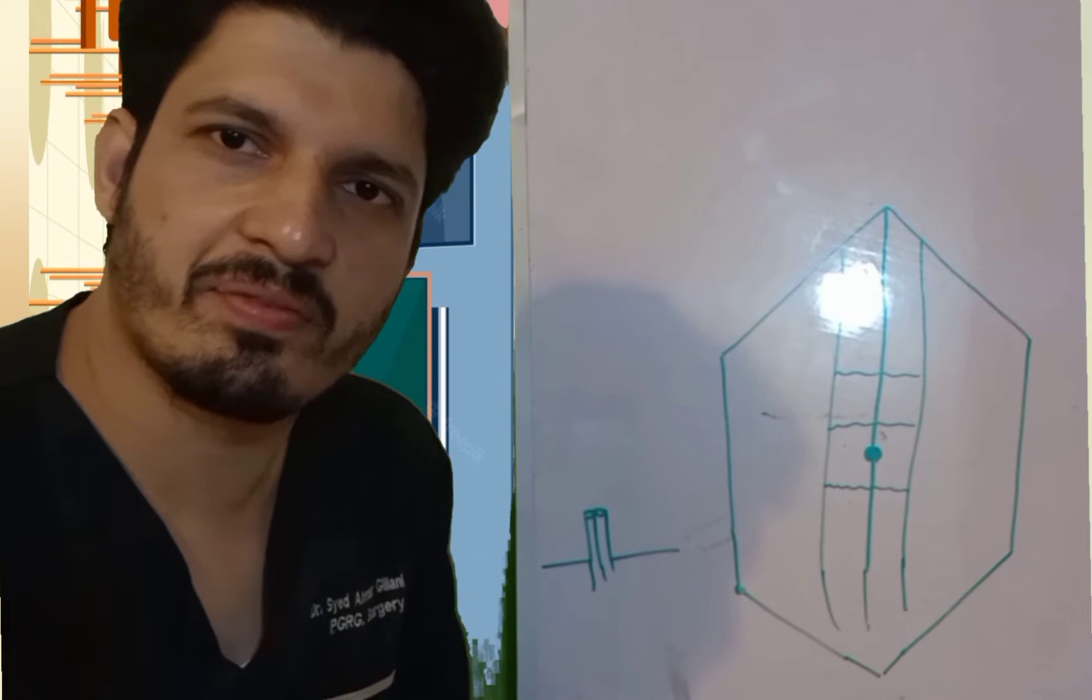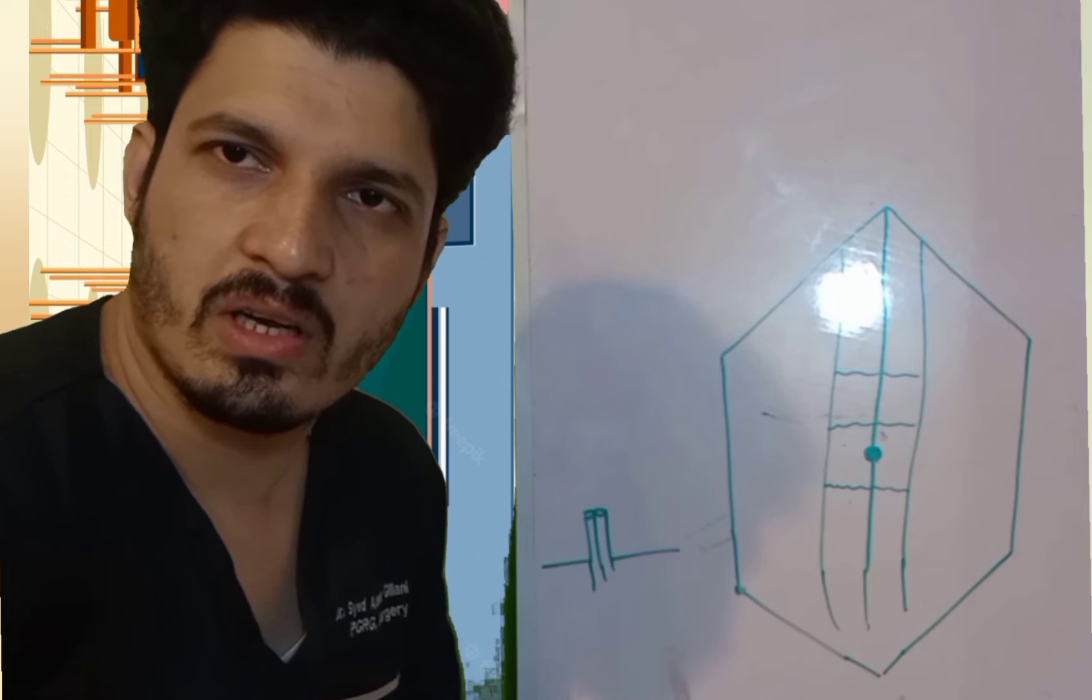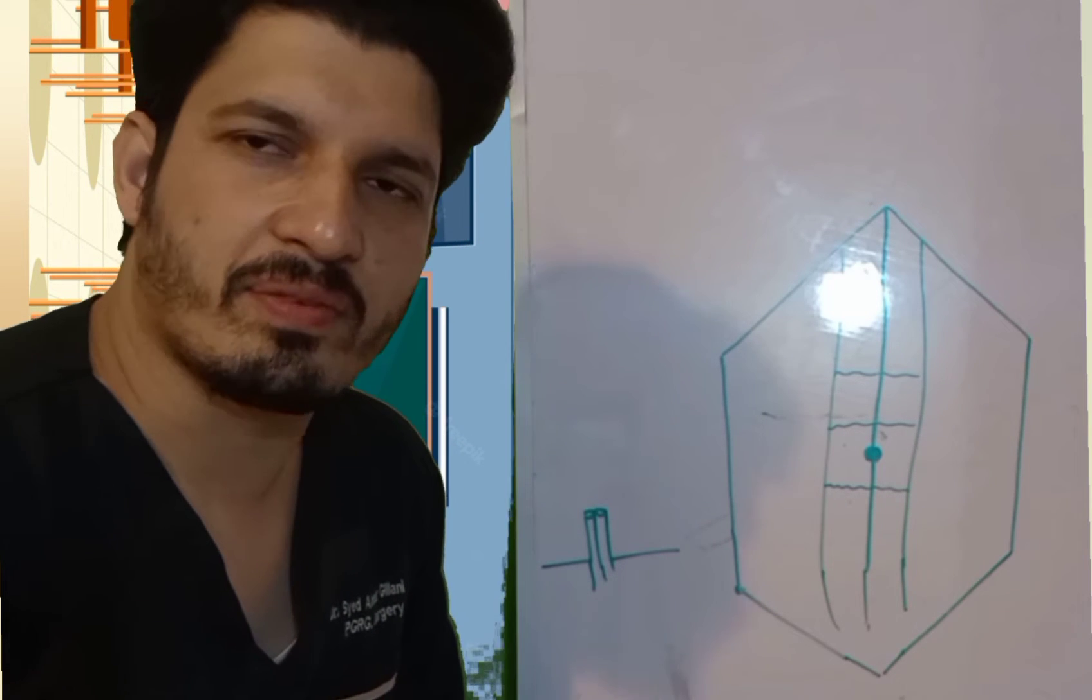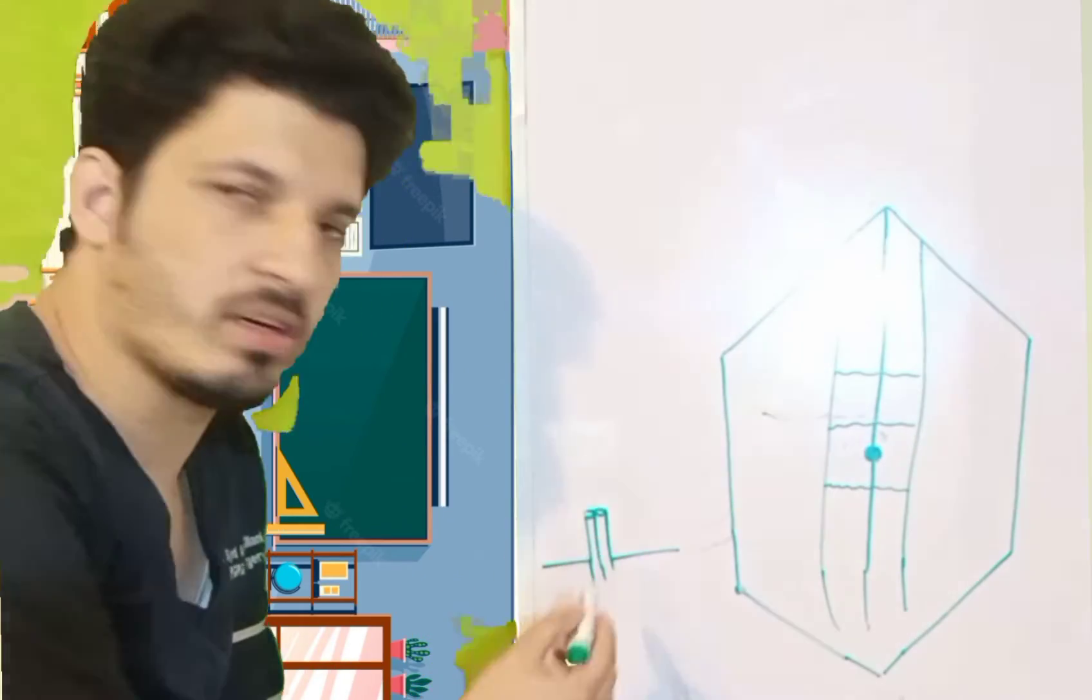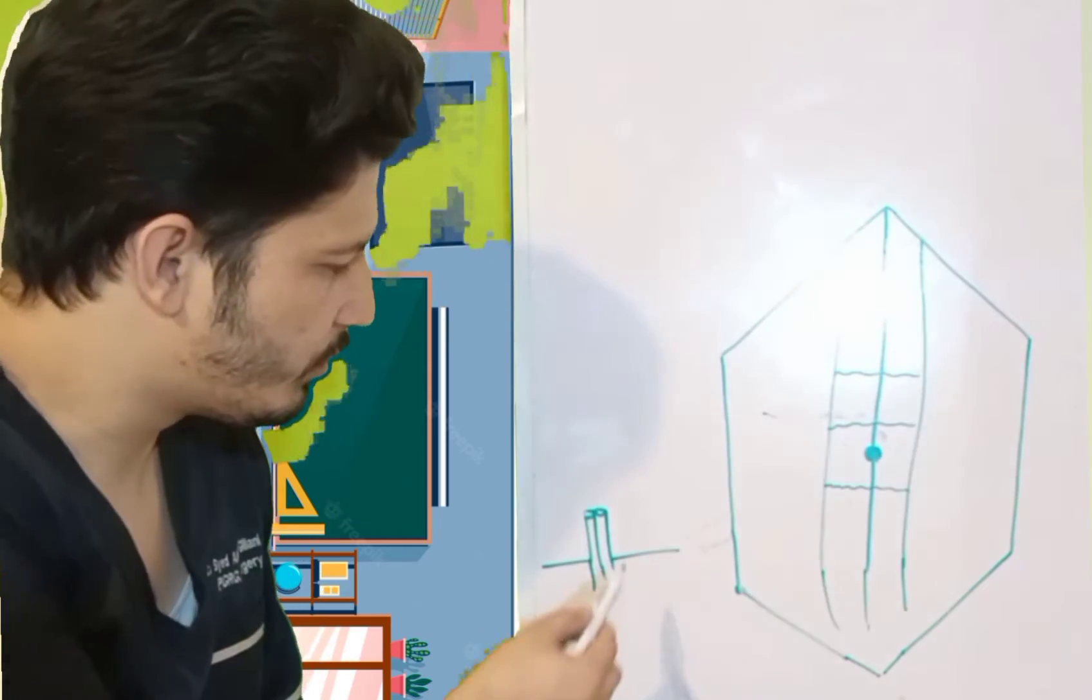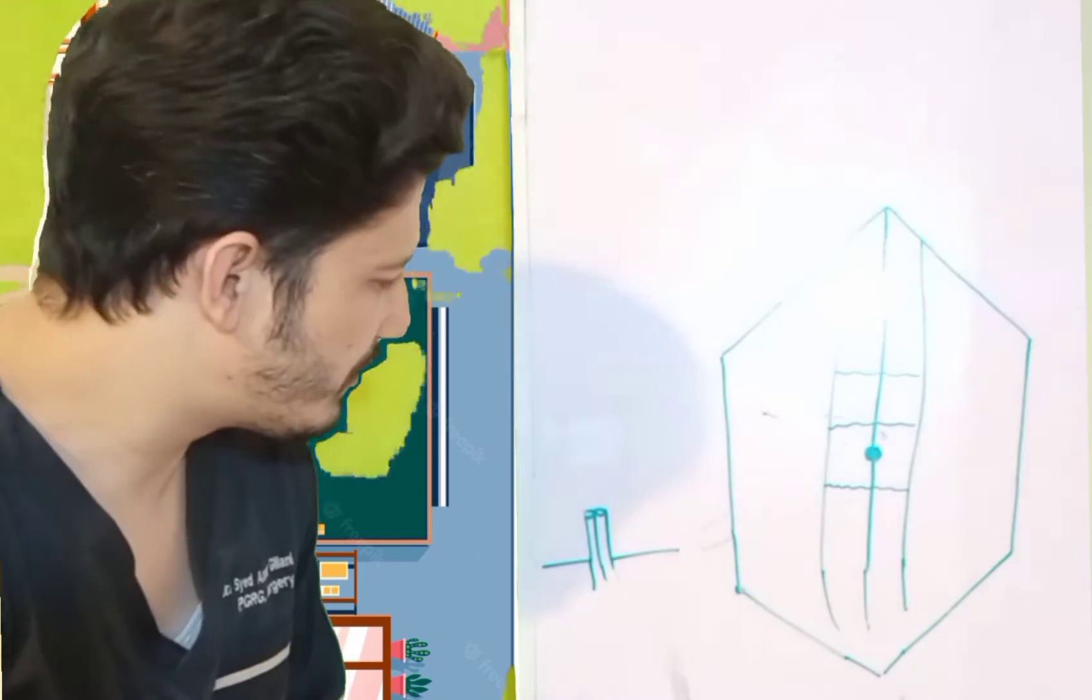And one thing more, if ileostomy is there, it will be spouted, and colostomy will be, you can say, flush. So suppose that this is the loops of the abdomen, loops of the intestine basically. And we are going to make the ileostomy in this patient. So what will I do?